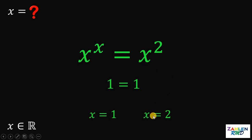How about if x equals 2? Let's replace all x with 2. We have 2 raised to 2 equals 2 squared. And 2 squared equals 2 squared. Definitely, they are the same and they are both equal to 4.